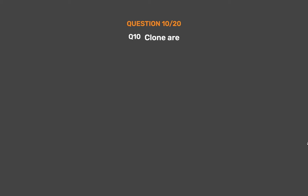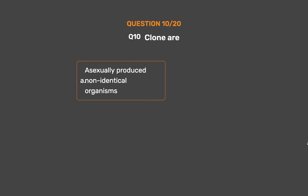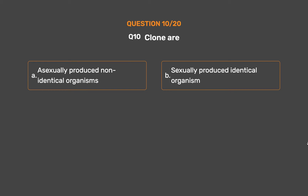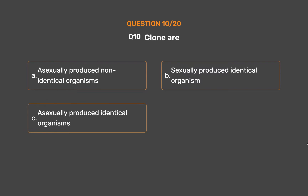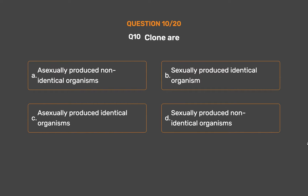Question No. 10. Clone is: Option A – Asexually produced non-identical organisms. Option B – Sexually produced identical organisms. Option C – Asexually produced identical organisms. Option D – Sexually produced non-identical organisms.